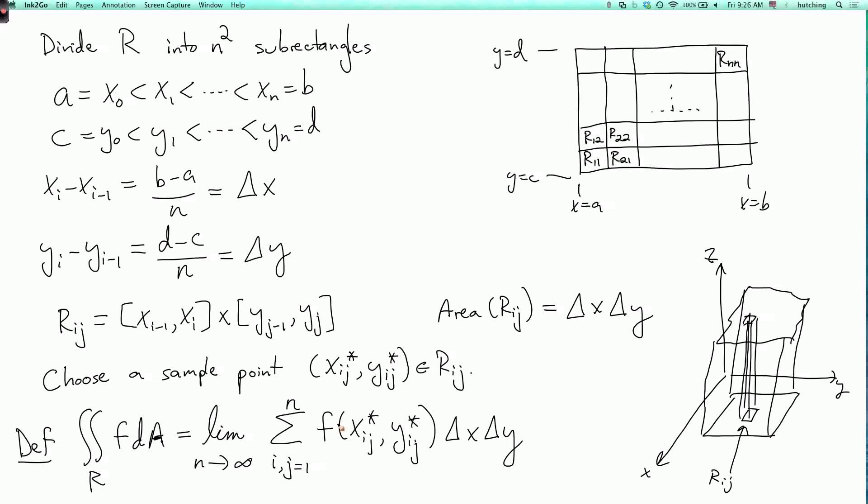And then we're taking the limit as n goes to infinity, so the skyscrapers get thinner and thinner, and the errors, the fact that f is not equal to f at its sample point over the whole rectangle, those errors get smaller and smaller, and we converge.